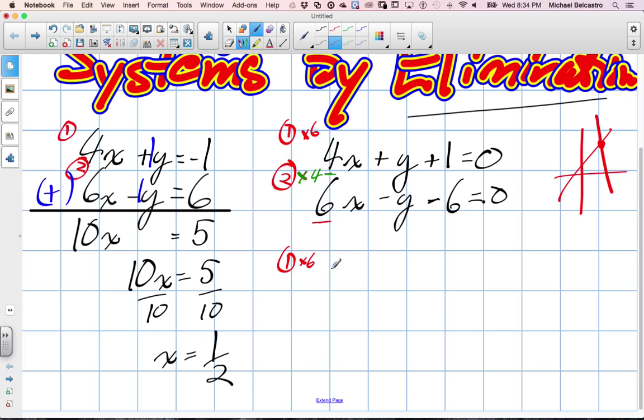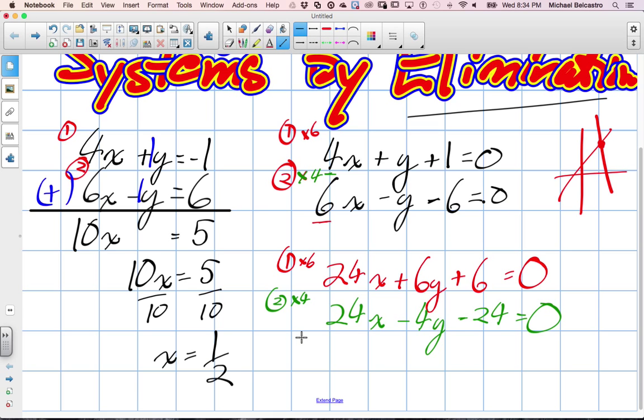So the new equation one, equation one times six, will now read six times four is 24x. Plus six y, six times one is six, and zero times six is almost still zero. And then our equation two times four is going to be 24x minus 4y minus 24, and zero times four is zero.